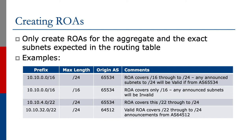The third line is for 10.10.4/22. Max length is /24 and origin AS65534. This ROA covers the /22 through to the /24 subnets. Subnet sizes smaller than this will be invalid.